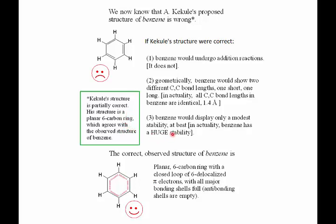What is the correct structure of benzene? In view of the testing, observations, and the work of Hückel applying molecular orbital theory, the correct observed structure is a planar six-carbon ring that doesn't have three separate double bonds. Instead, the total of six pi electrons is delocalized over the ring — a closed loop of six delocalized pi electrons. When examined with molecular orbital theory, all the major bonding shells are full and all the major anti-bonding shells are empty.